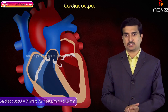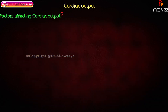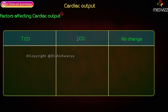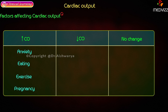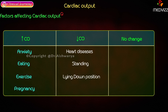Cardiac output is increased in conditions like anxiety, eating, exercise, and pregnancy. Decreased cardiac output is seen in conditions like myocardial diseases. Standing position decreases cardiac output because of the pulling of blood toward the lower part of the body. The lying down position can also decrease cardiac output. During sleep, there is no change in cardiac output.